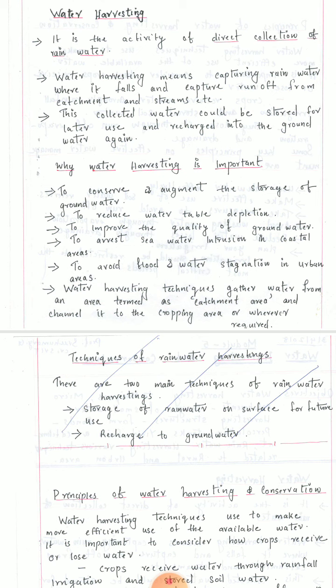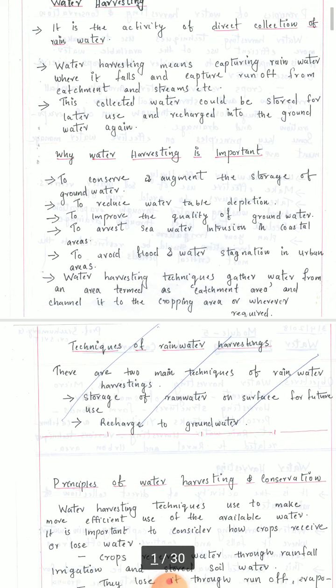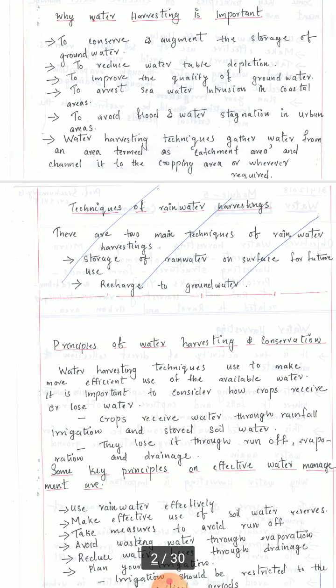Once we collect water from the drain, it can be stored or it may be used to recharge the groundwater. The direct flow of water into the ground surface makes the recharge of the groundwater. Next we will see why water harvesting is important. We have to do water harvesting to conserve or augment the storage of groundwater. As we know, we have scarcity of water resources where we depend upon the groundwater resource, and this groundwater will be available only if it is recharged. In order to recharge and conserve the groundwater, the rainwater harvesting technique is very important.